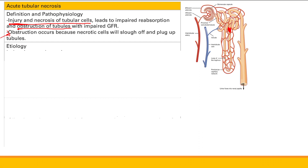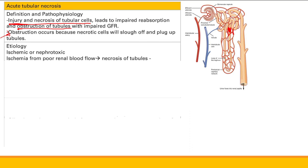Etiology — what can cause cell death of these tubular cells? The etiologies are either ischemic or nephrotoxic. Ischemic is if you have poor renal blood flow. All these blood vessels supply these renal tubular walls, and if they don't get enough blood, they're going to get necrosis. The two most common places are the proximal convoluted tubule and the ascending limb.